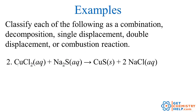In example two, we've got copper chloride plus sodium sulfide producing copper sulfide and sodium chloride. The sulfur was with the sodium — now it's with the copper. The chlorine was with the copper — now it's with the sodium. So two things were displaced, so this would be a double displacement reaction.